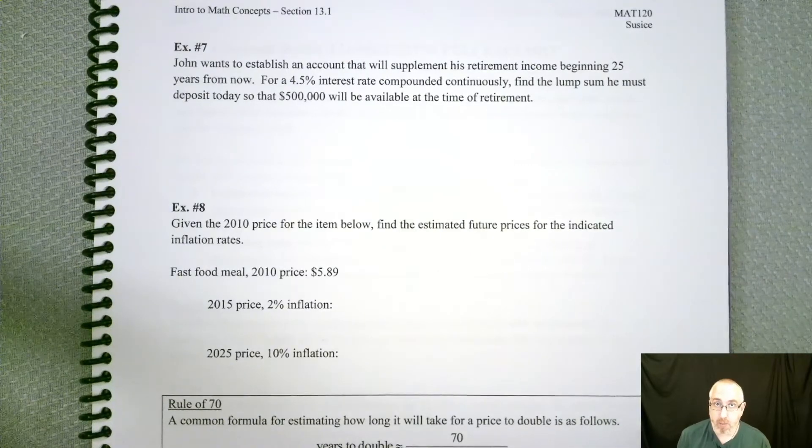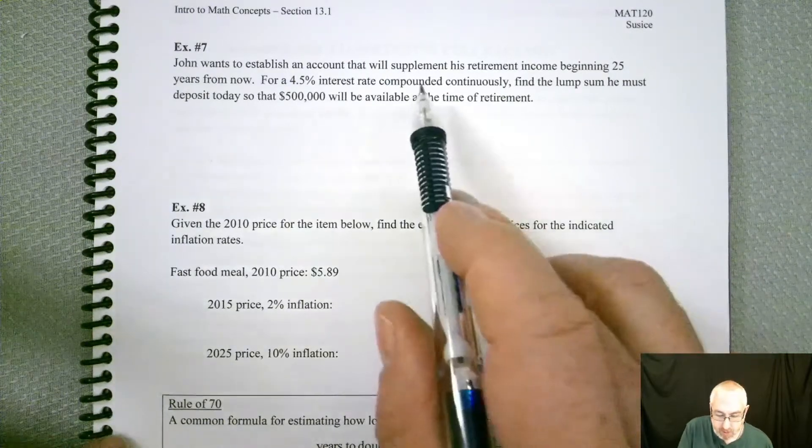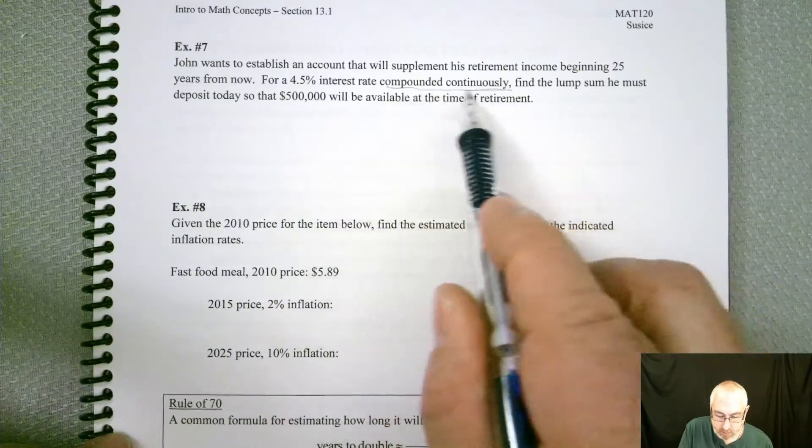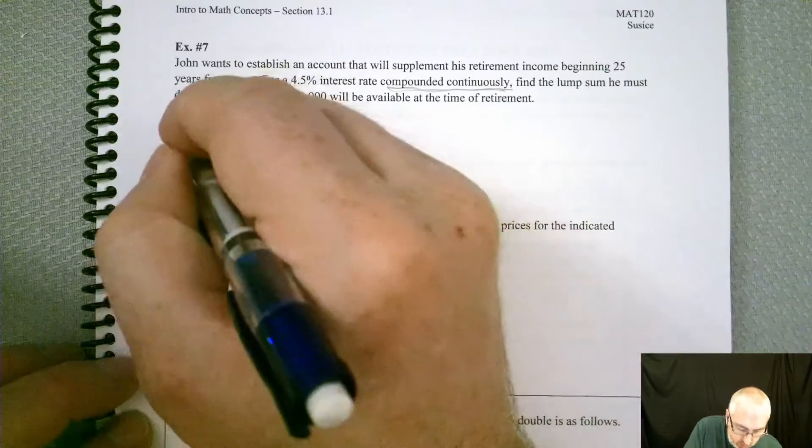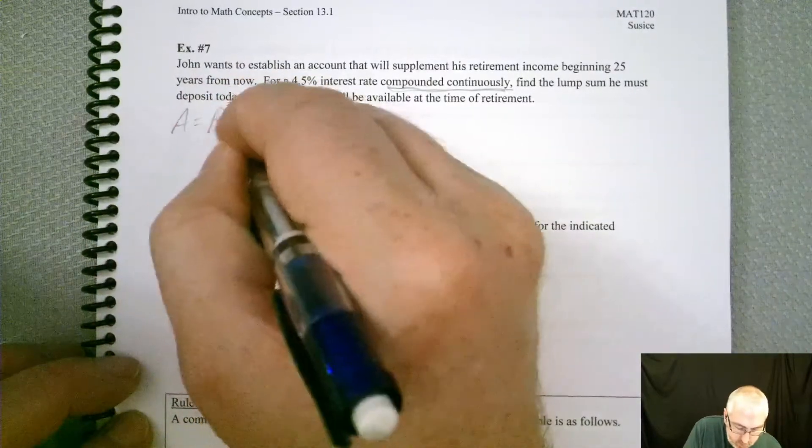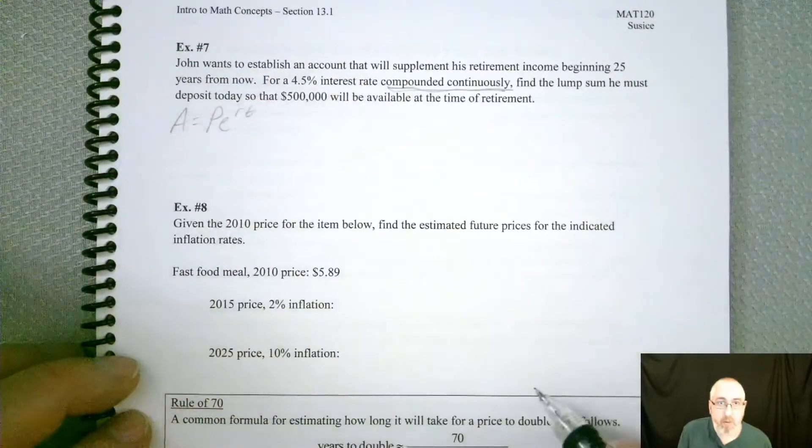So which formula should we use? Remember, there's key words that will point you to that formula. Compounded continuously. So there's only one formula that's going to work, your PERT formula.